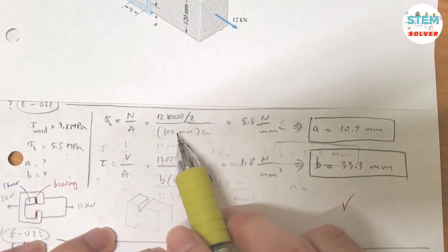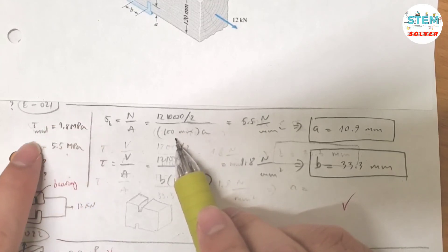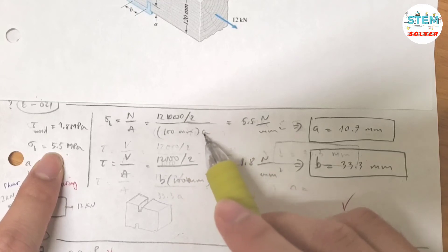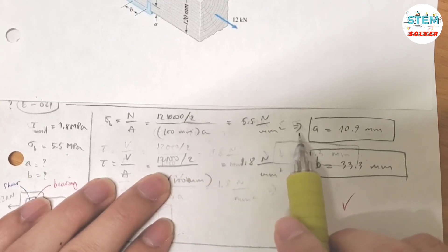You put this in the calculator. And the bearing stress is given as 5.5 MPa. Rearrange this one, you solve for A and you would get 10.9 mm.